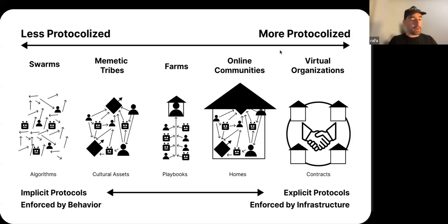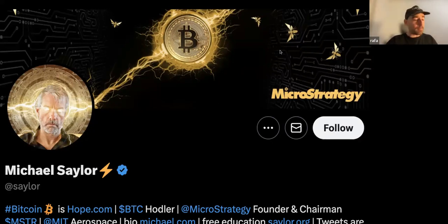Through protocols we can actually transform one organization into another. We can look at the transformation from a swarm into a mimetic tribe by looking at how implicit protocols that are enforced by behavior become explicit protocols. Here you can see Michael Saylor and the symbols which they've adapted to convert something that was traditionally just a group of people with no exact name into a cult-like environment.